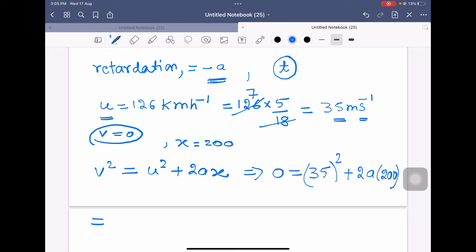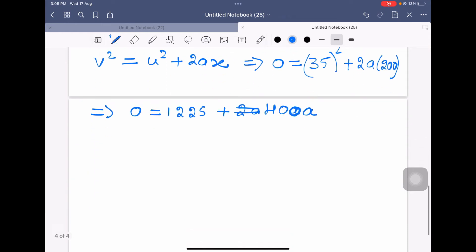So this implies 35 squared is 1225 plus 2ax. 2 times 200 is 400a.